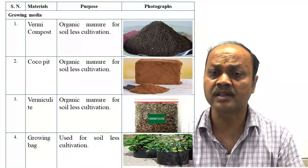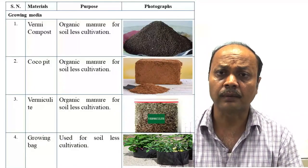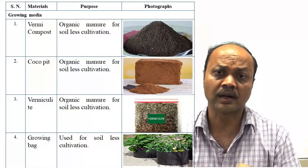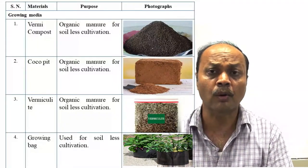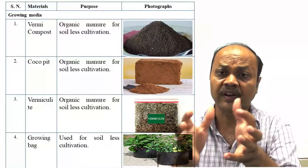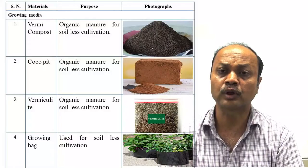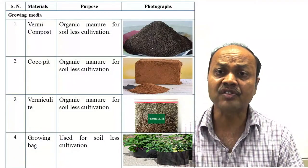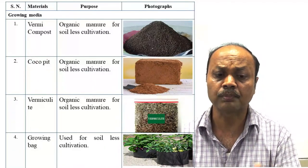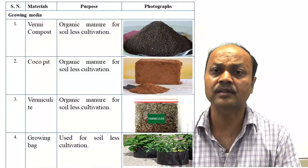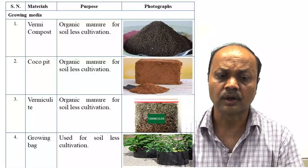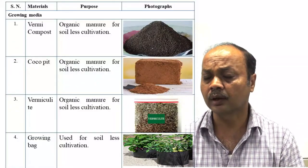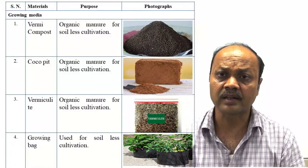Various growing media are used. If not using soil, different types of growing media can be used with the desired physical, chemical, and microbial properties — considering porosity, water holding capacity, and cation exchange capacity. Artificial media is more suitable, including soilless and hydroponic systems. Vermicompost and coco peat are commonly used. In our project, coco peat and vermicompost are used, each having its advantages and disadvantages.